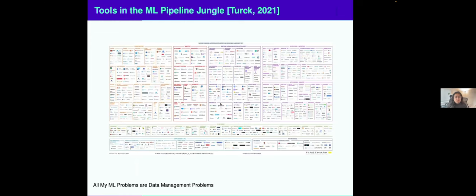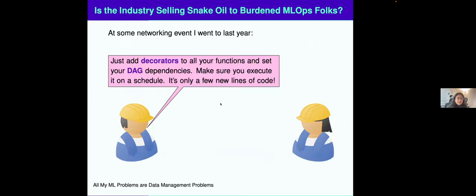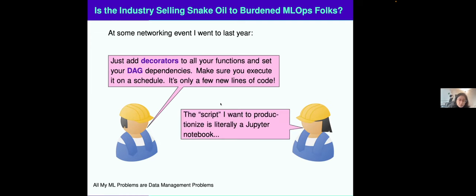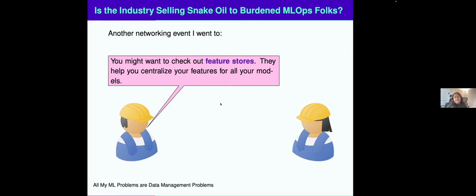When you have all of these tools, one thing very terrible about it, but natural, is you feel like you're getting sold snake oil. Last year, I went to some networking event. Someone was telling me they have this new tool where all you had to do is add decorators to your functions, and set their dependencies, and set your schedule. It's just a few new lines of code, and you can get some production ML pipeline. I'm sitting here thinking, I don't even know if I want to productionize anything, it's a Jupyter notebook that I want to productionize. Another networking event, someone was trying to sell me feature stores. While they might be useful for a lot of cases, I was very skeptical. I was very happy with my table of features that I was just adding to on a schedule.